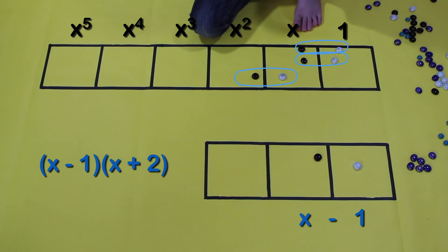Alright, here we have our answer. x minus 1 times x plus 2 equals x squared. Wait. But we're not done yet.